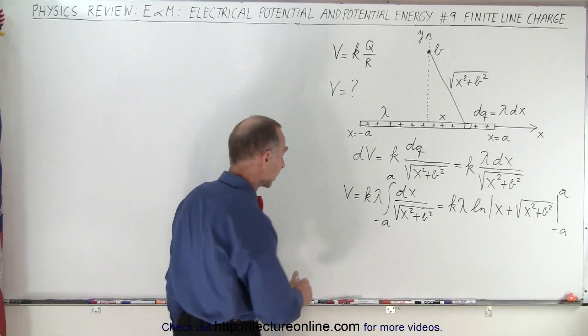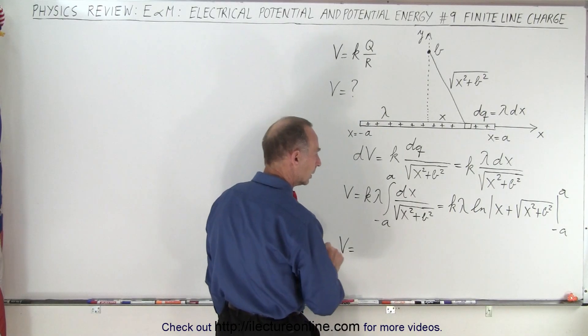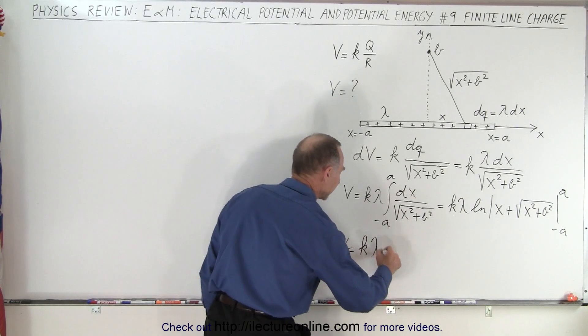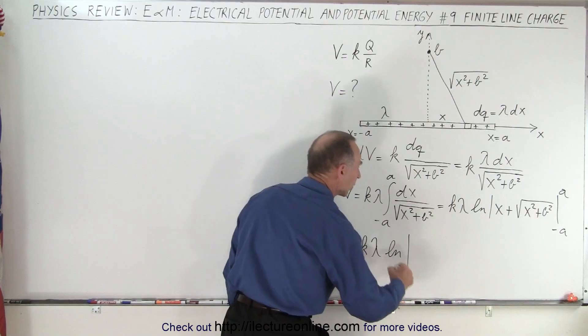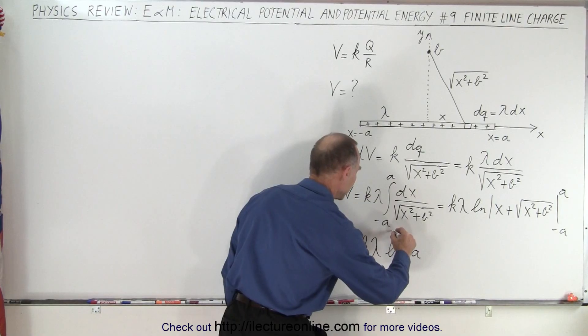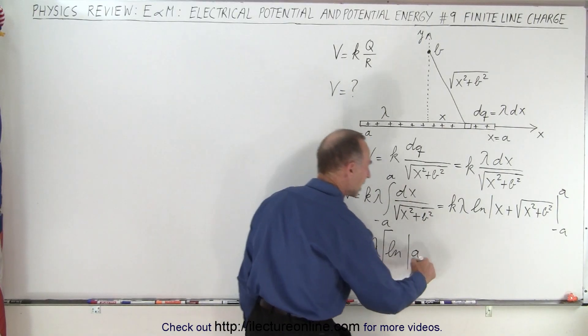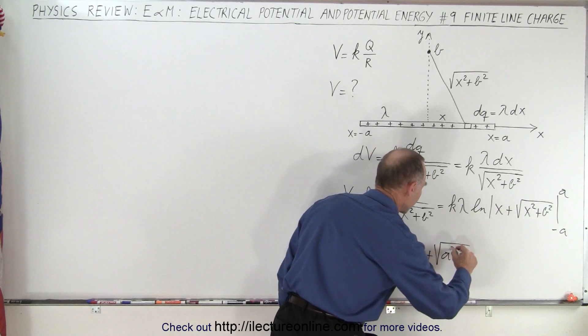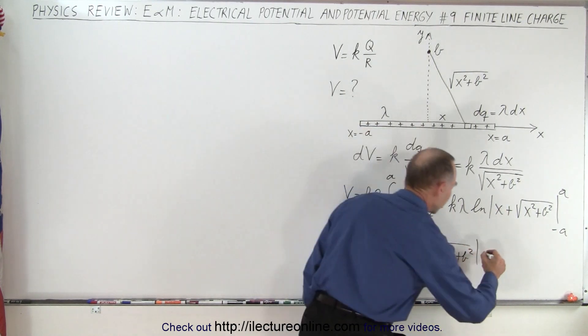All right, so once we plug in the limits we get the following. We get the potential is equal to k times lambda times the natural log of... plug in the upper limit, we get a, and let me go like this because we have first to plug in the upper limit, so we get the natural log of a plus the square root of a squared plus b squared, minus when we plug in the lower limit...